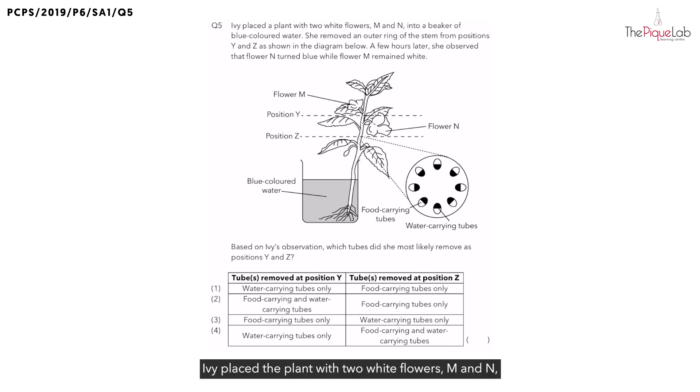Question 5. Ivy placed a plant with two white flowers, M and N, into a beaker of blue colored water. She removed an outer ring of the stem from positions Y and Z as shown in the diagram below. A few hours later, she observed that flower N turned blue while flower M remained white.